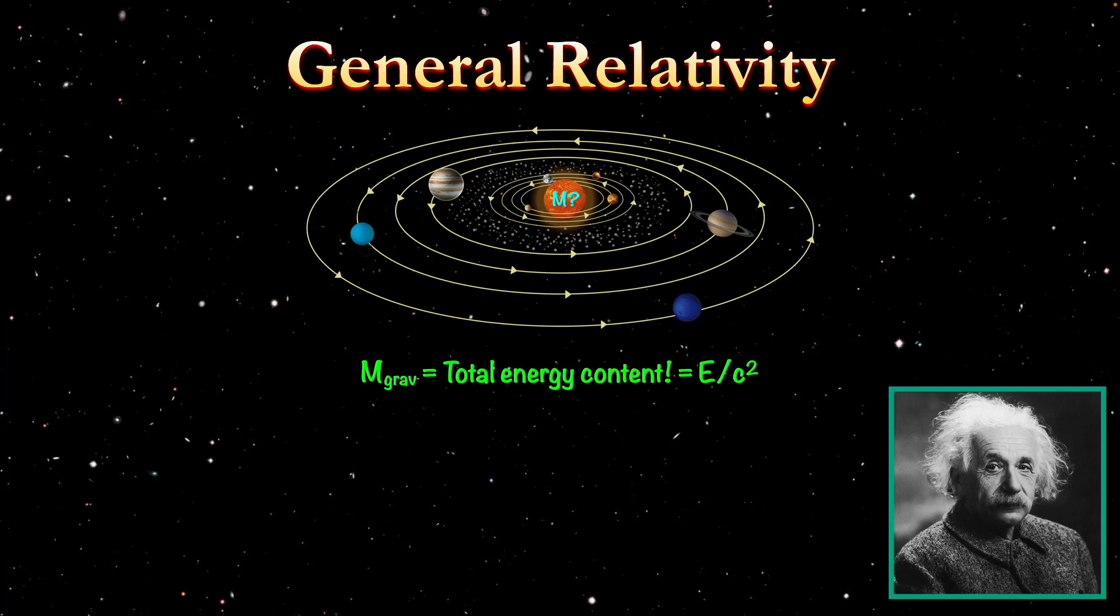And to be clear, when I say something has a gravitational mass, this is not referring to the orbiting objects, this is referring to the object that is causing the curvature in space-time. So in this case, this would be the mass of the sun, not the mass of, say, Jupiter or some other planet.